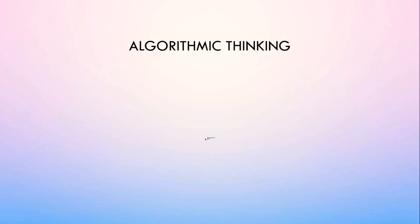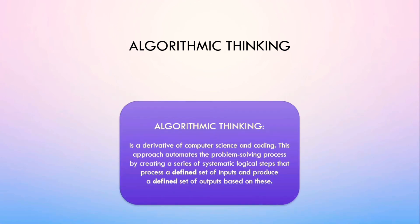Algorithmic Thinking. Definition: Algorithmic thinking is a derivative of computer science and coding. This approach automates the problem solving process by creating a series of systematic logical steps that process a defined set of inputs and produce a defined set of outputs based on this.